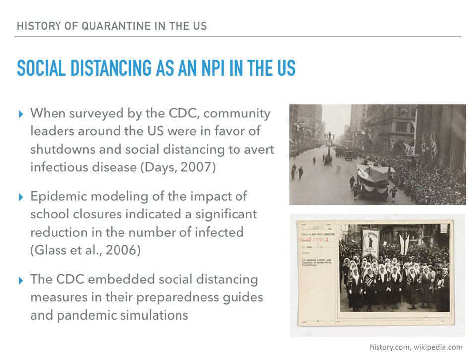In 2005, 14-year-old Laura Glass did a class project involving a model of social networks at her Albuquerque high school. Her father Robert Glass was a scientist who specialized in building models to explain how complex systems work and how they can fail. Robert extended Laura's work to do epidemic modeling. According to their calculations, in a town of 10,000 people, if schools stayed open, half the population would be infected — but if they closed the schools, only 500 individuals would get sick. Laura was also a co-author on the eventual publication.